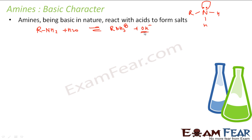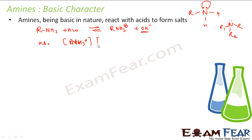The basic strength of an amine depends on the dissociation constant Kb, which in turn depends on the structure of the amine. For the reaction RNH₂ + H₂O, the Kb is: Kb = [RNH₃⁺][OH⁻] / [RNH₂]. Since water is in excess, we ignore it.